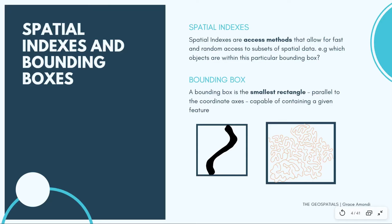Spatial indexes are access methods and they are able to allow fast and random access of spatial data. For example, if you want to determine objects that fall within a particular bounding box, you are able to write a query that will in turn be used by PostGIS to access the objects that fulfill this condition. PostGIS uses the R-tree spatial index to access this kind of random data.